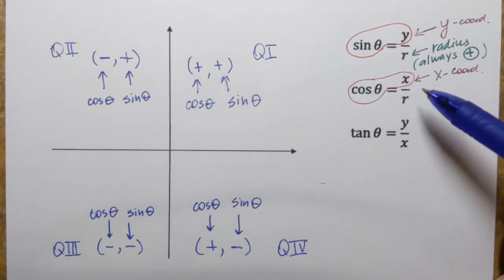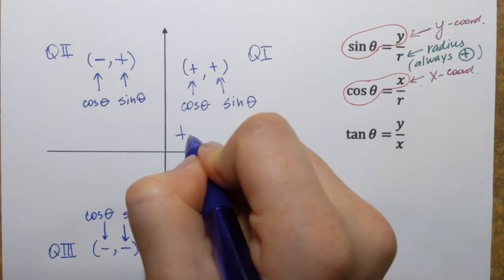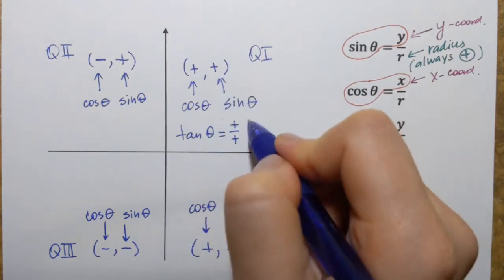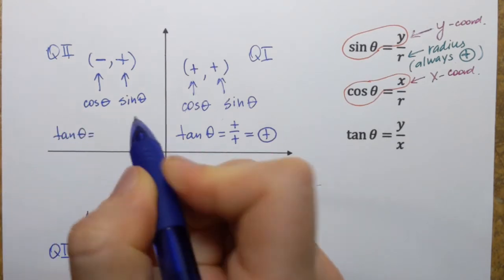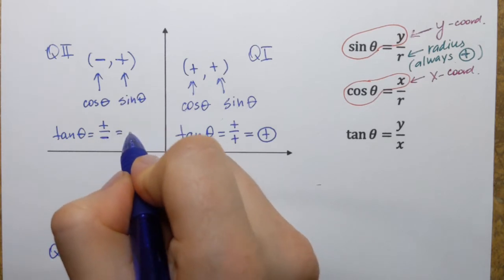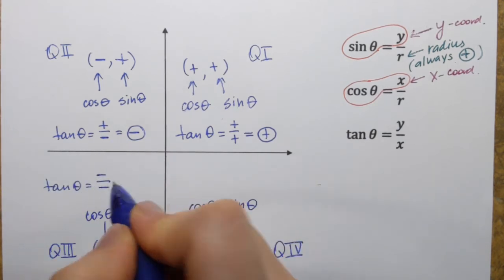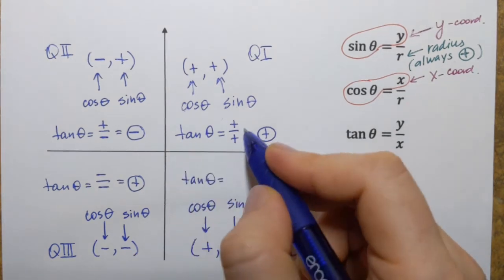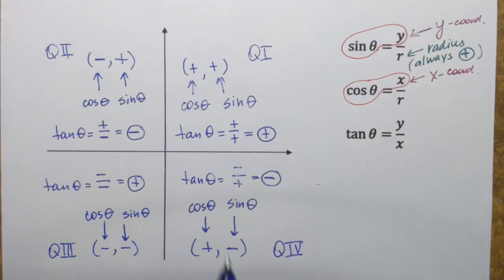Now let's talk about tangent. Whether tangent is positive or negative depends on both x and y coordinates. In quadrant 1, tangent is y over x — y is positive and x is positive, so dividing two positives gives a positive result. In quadrant 2, we take positive y over negative x, so the result is negative. In quadrant 3, both y and x are negative — negative divided by negative gives a positive result. In quadrant 4, it's negative y over positive x, so negative over positive is negative.